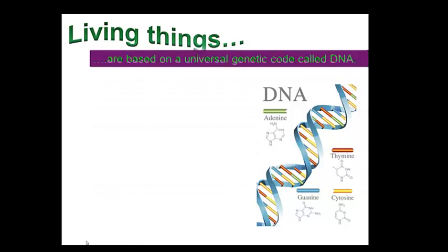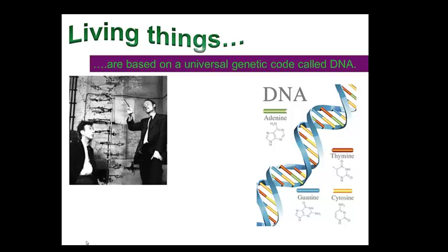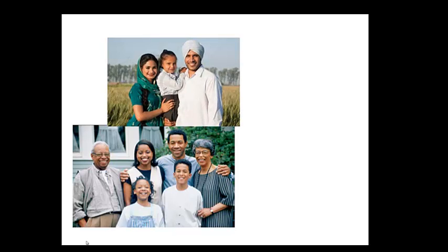Sexual reproduction involves the combination of male and female sex cells. Living things are based on a universal genetic code called DNA. Watson and Crick, as we see here in the figure by their model of DNA, received the Nobel Prize for identifying the structure of DNA. But it was Rosalind Franklin who didn't get any honors for her work — actually, they took her data — that determined the structure of DNA. All organisms pass their traits in genes, and genes are composed of DNA. Heredity is the reason why children resemble their parents.